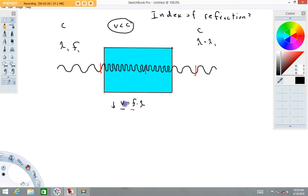Since the velocity goes down, frequency doesn't change, that means the wavelength has to also go down. So we're gonna have a new wavelength inside of here, and it's gonna be some number less than the incoming wavelength, which I'm gonna call lambda one.